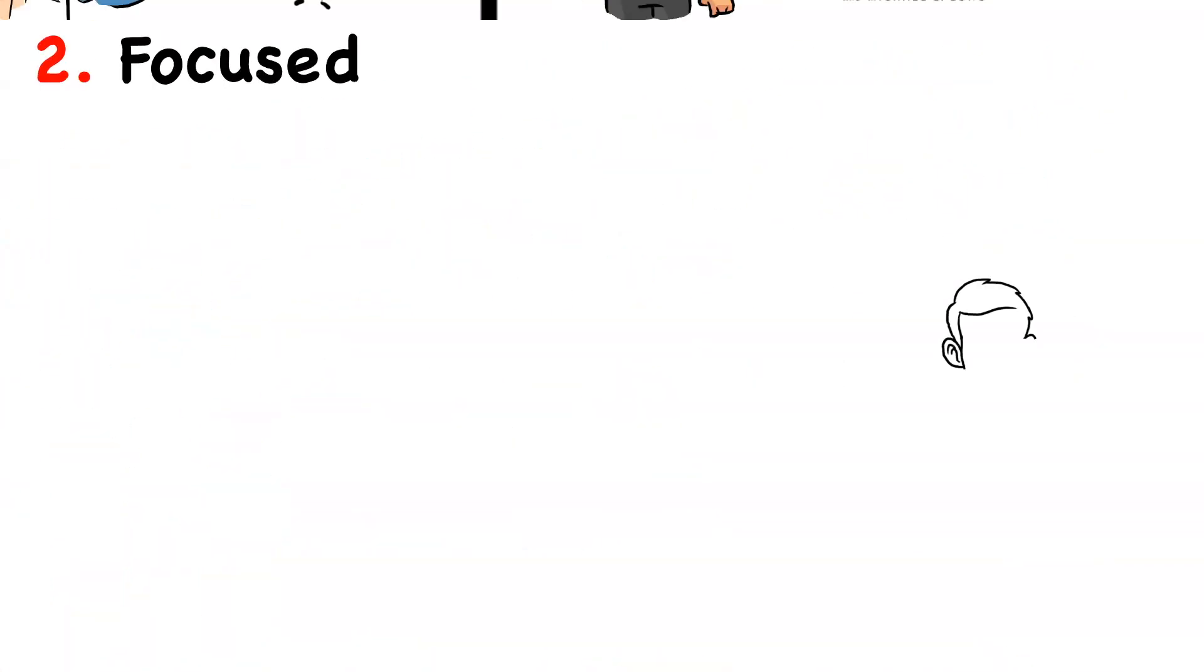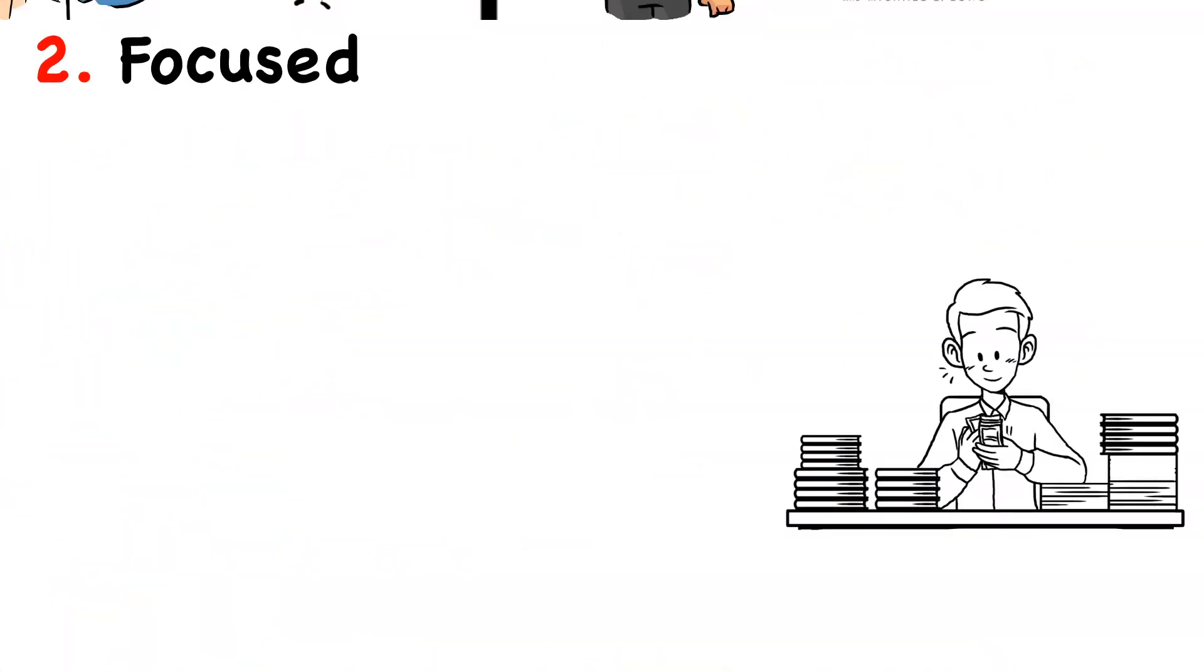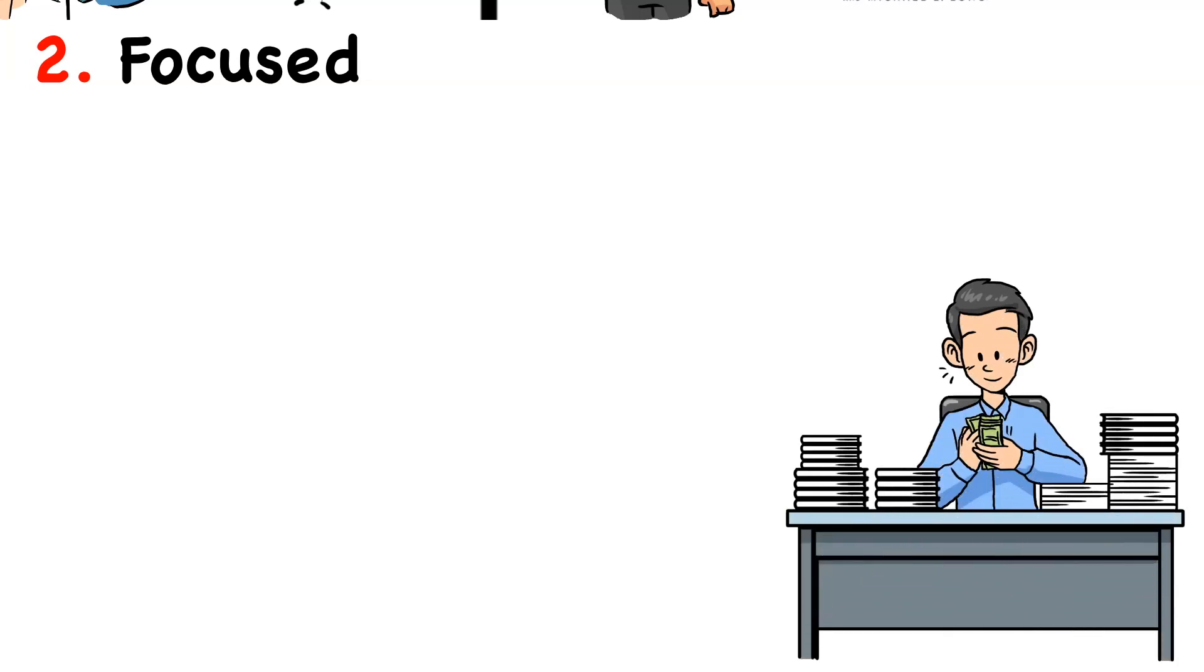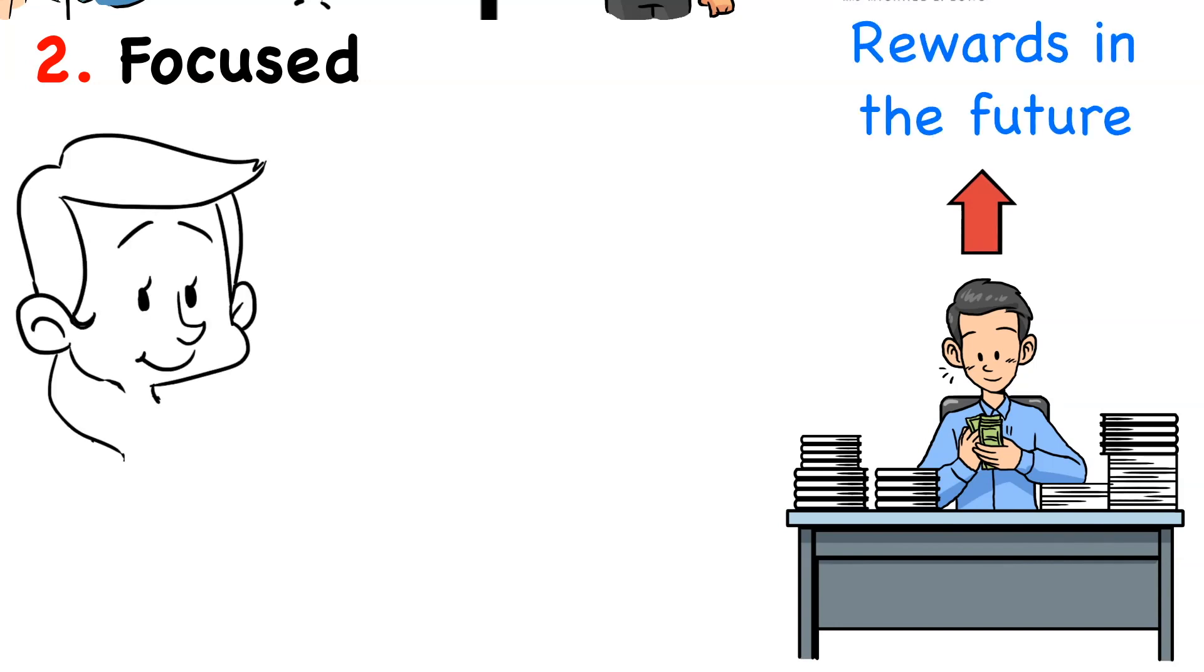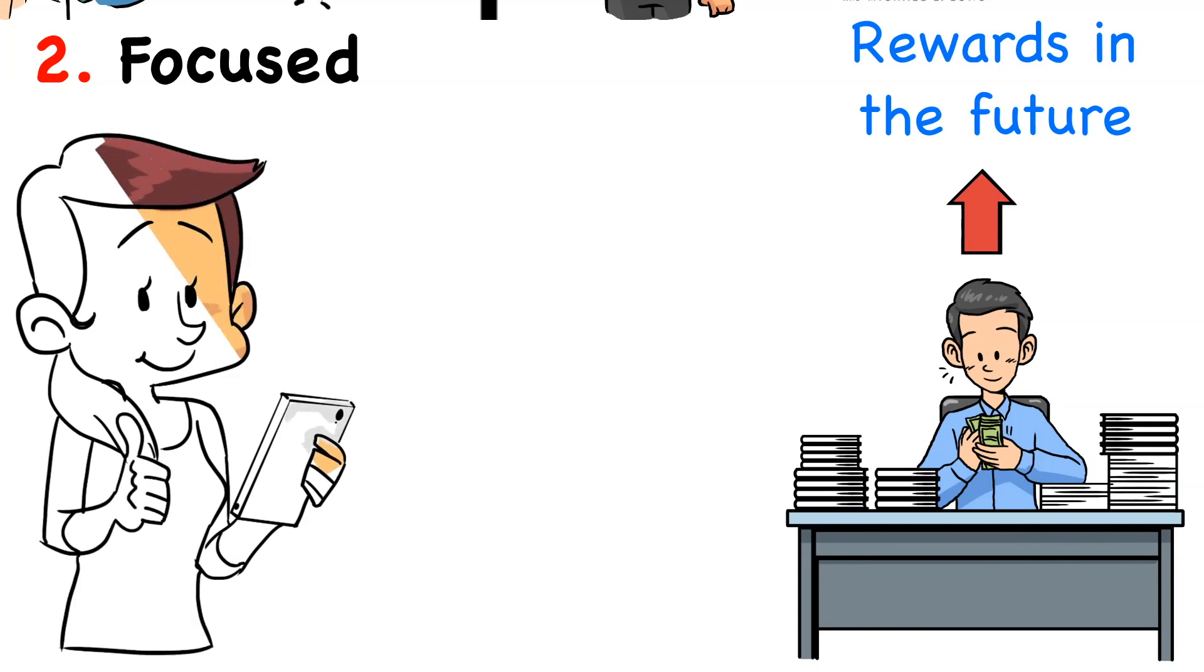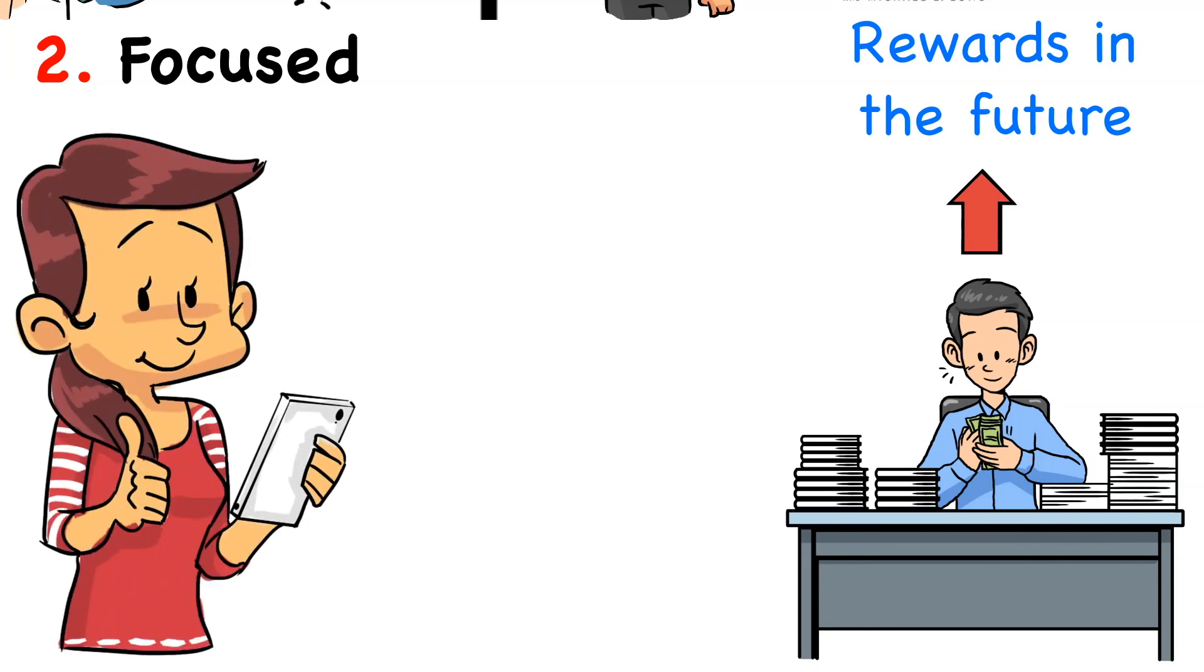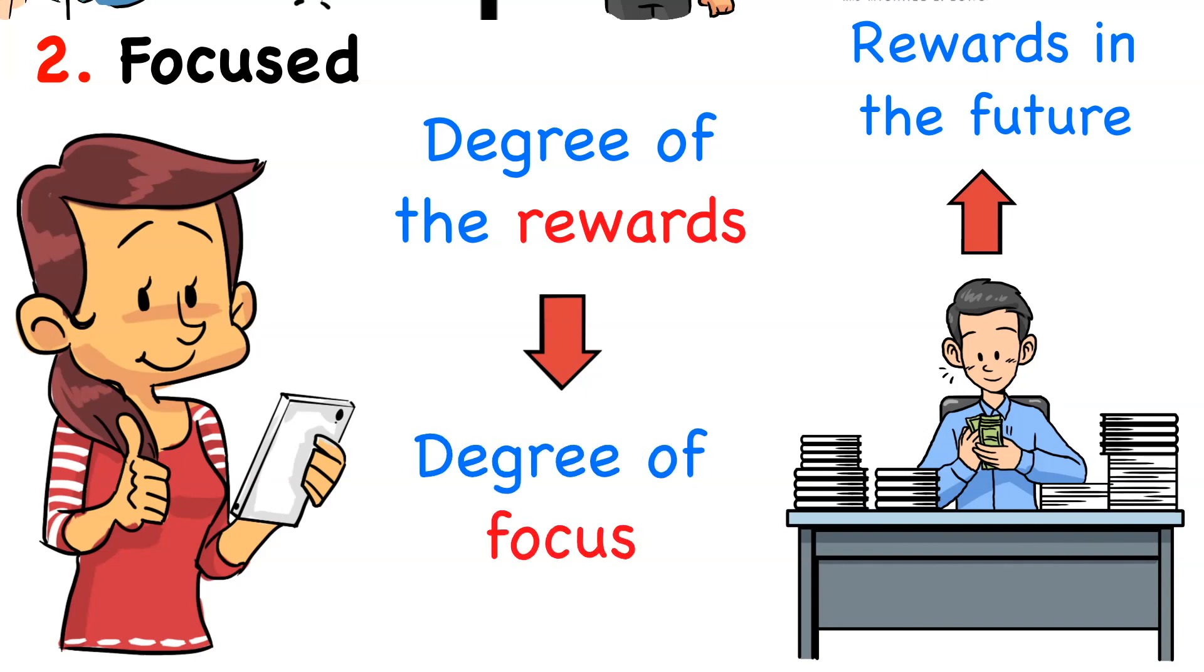Two, focused. Every achievement requires some form of work and work requires focus. Now, the thing is that dopamine will only help you focus on the things that will give you rewards in the future. This is why people spend hours choosing and editing the best photo to get the most amount of likes. The degree of the rewards determines the degree of focused experience.